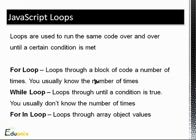Essentially loops all do the same thing. But there's usually a bit of a difference when choosing which loop to use. For instance, the for loop is usually used when you know the exact number of times that it's going to run. While the while loop is usually used when you don't know the number of times. And the for in loop is usually used with array objects.